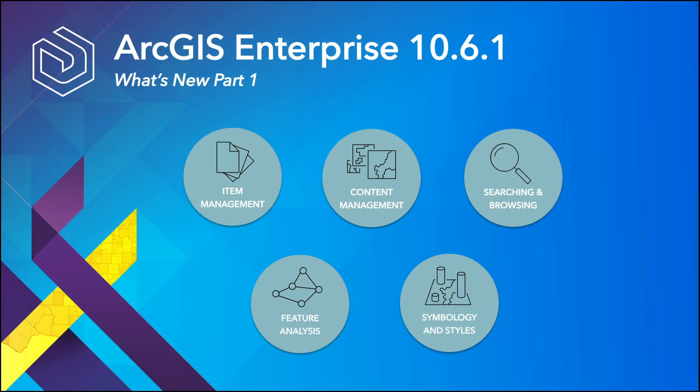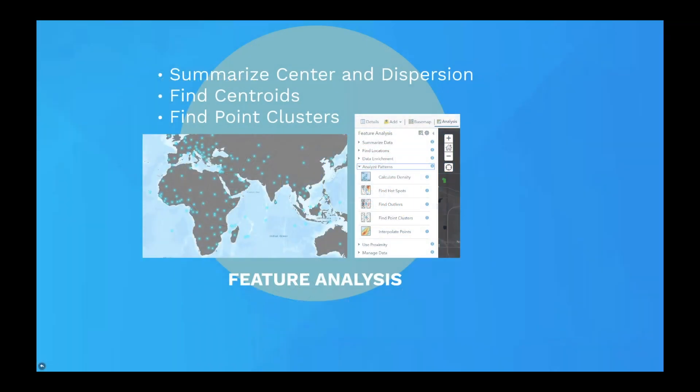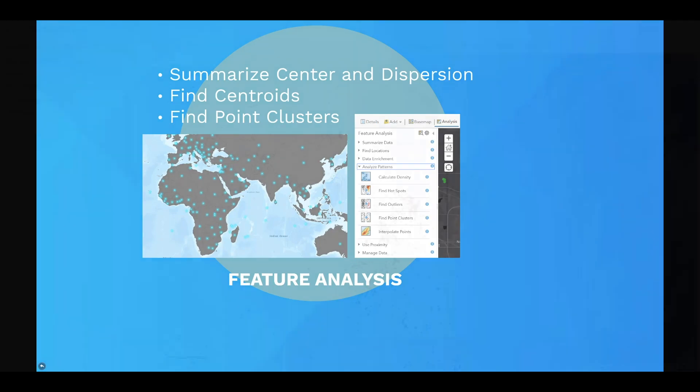Three new tools are now available in ArcGIS Enterprise 10.6.1 under Standard Feature Analysis. If you would like to determine the spatial distribution of a set of features, you can use the new Summarize Center and Dispersion tool. You could also use Find Centroids to identify the geometric center of a multipoint, line, or area feature. Also new at 10.6.1 is Find Point Clusters, an analysis tool that locates clusters of point features based on their spatial distribution, helping you to visualize significant concentrations of points or events.